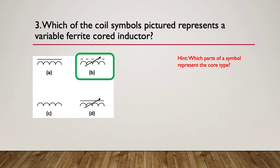So the answer here is B. With nothing here, this is air. A solid line represents steel or ferrous material. A dotted line represents ferrite. The arrows represent the variable, so the arrows are the variable. So the variable ferrite coil was B.